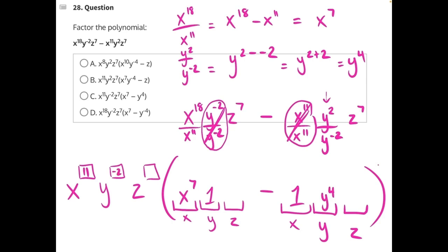Now to our z variable. The highest exponential power we can pull out of z to the 7 and z to the 7 is z to the 7. Anything divided by itself is just 1. So in both of these cases, we will cancel them out. And all that's left is a 1.